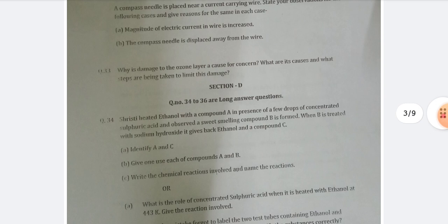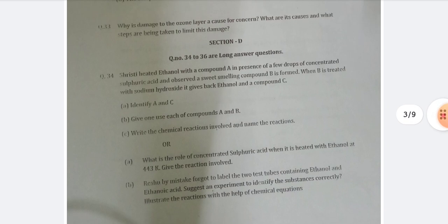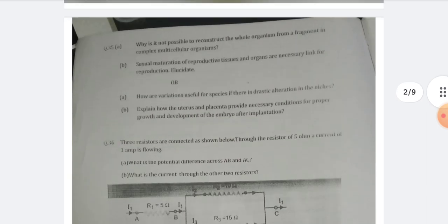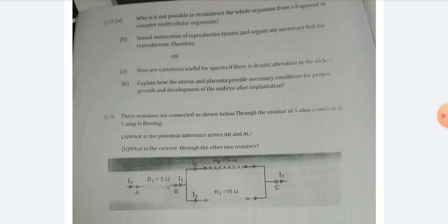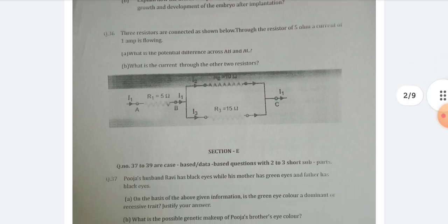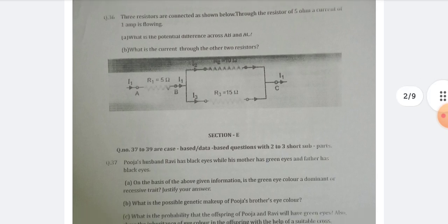We have now reached Section D — the long answer type questions. We have to write these answers in a long form. Question number 36 is from physics, the electricity chapter, which is an interesting chapter. Here resistance R2 is equal to 10 ohm, resistance R3 is equal to 15 ohm, and resistance R1 is equal to 5 ohm.